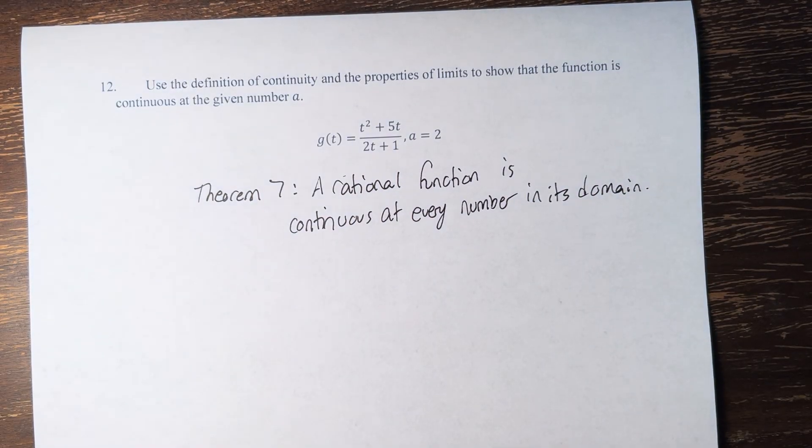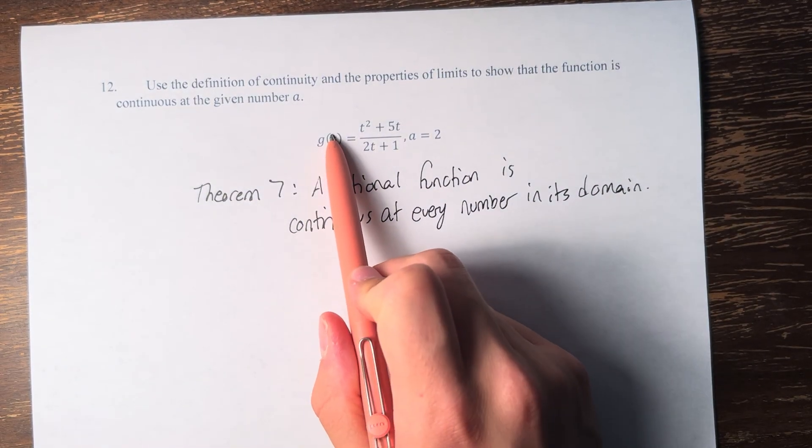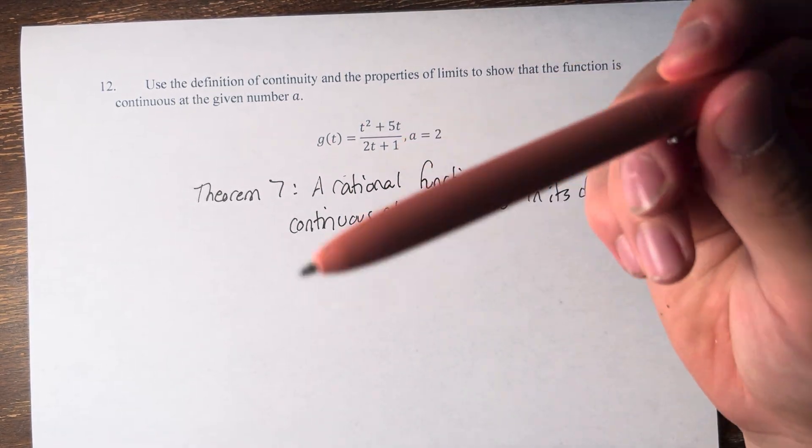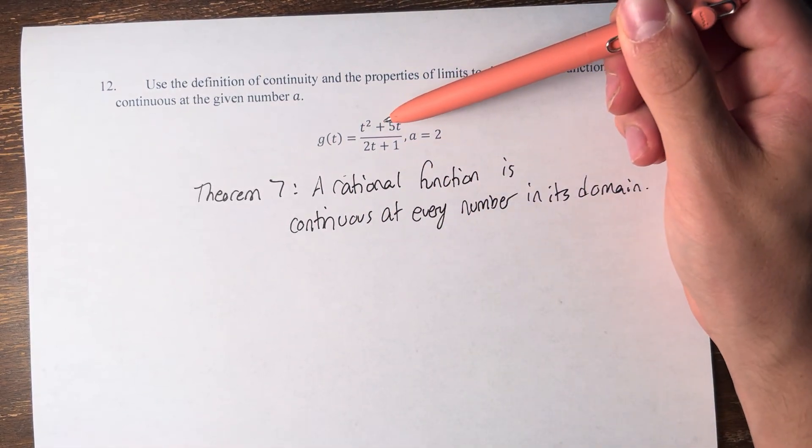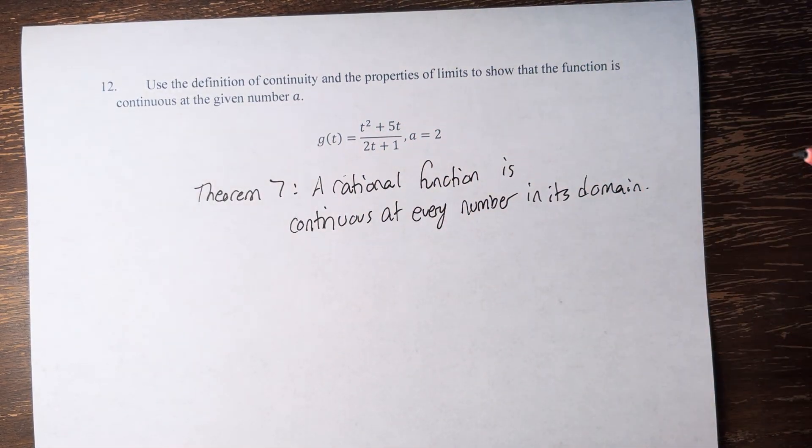So how do we make sense of that? Well, this function is existing at every single value of t, except for when the denominator is equal to 0.